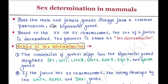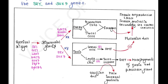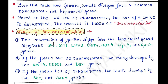Both the male and female gonads diverge from a common precursor, the bipotential gonad. Based on the XX or XY chromosomes, the sex of a fetus is determined, and the process is known as sex determination.